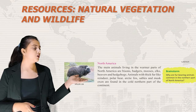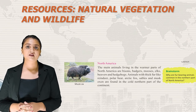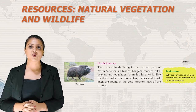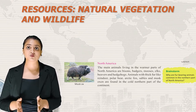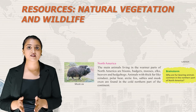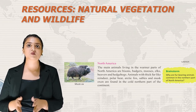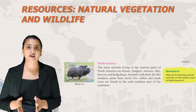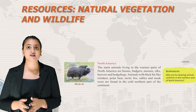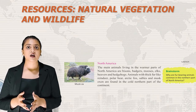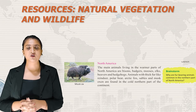The main animals in the warmer parts of North America are bisons, badgers, moose, elk, beaver and hedgehogs. Animals with thick fur like reindeer, polar bear, arctic fox, sable and musk oxen are found in the cold northern part of the continent.